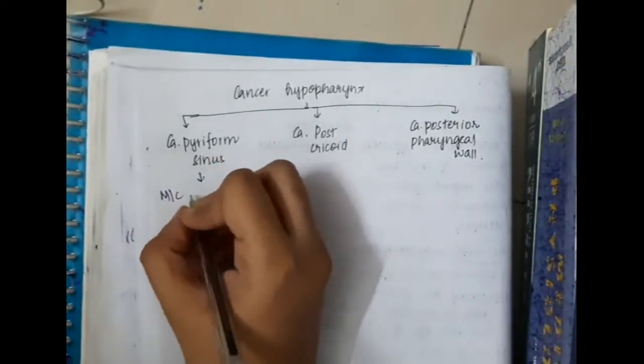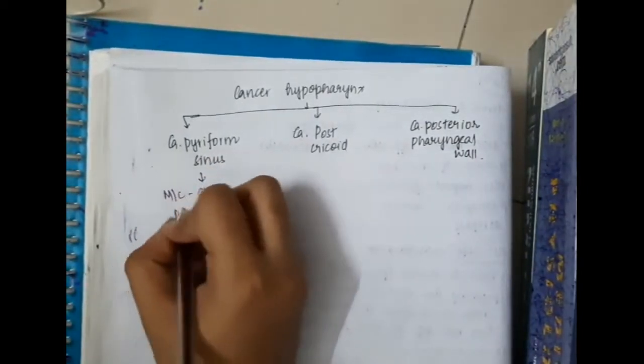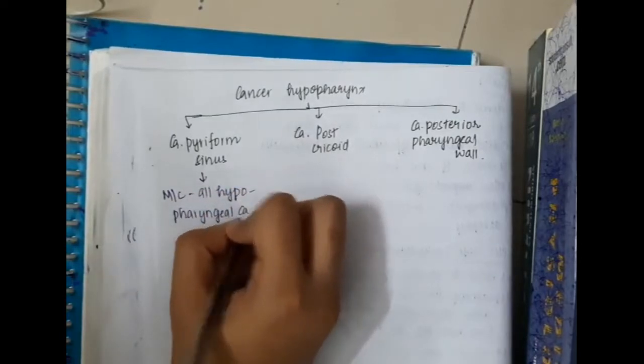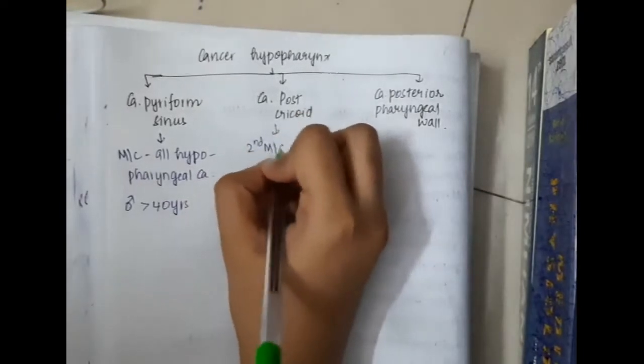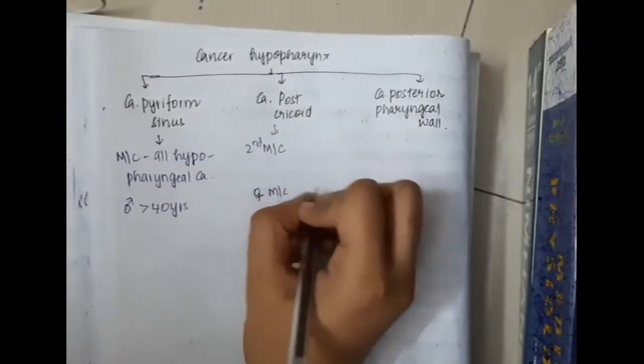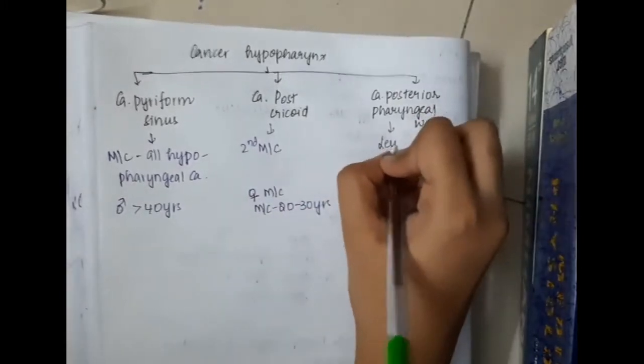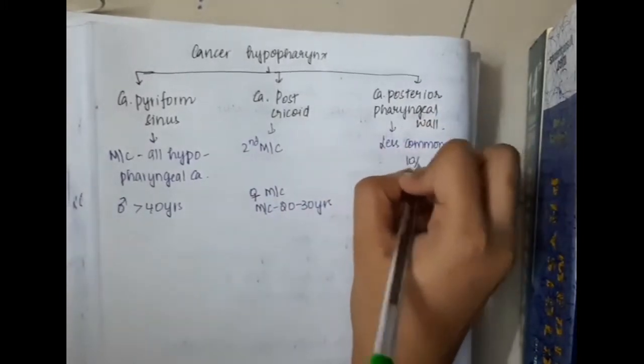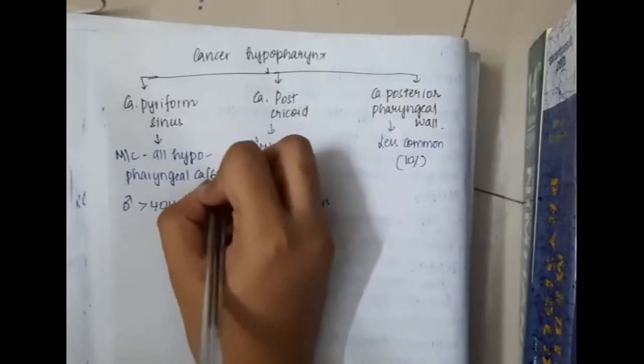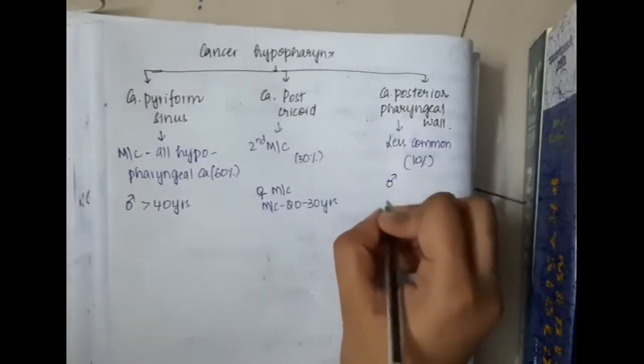Carcinoma pyriform sinus is most common of all hypopharyngeal carcinomas. It is seen in males more than 40 years, whereas carcinoma post cricoid region is the second most common and it is seen in females most commonly and is also seen most commonly in 20-30 years.